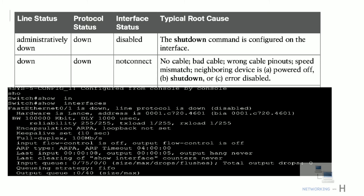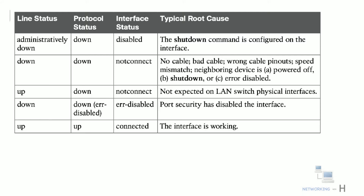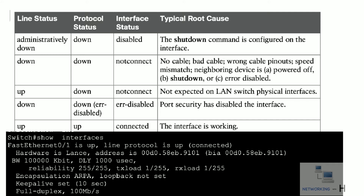Other causes for 'down/down' or 'not connect' include the neighboring device being powered off, shutdown, or error-disabled. If the interface status shows 'error-disabled', the likely cause is that port security has disabled the interface. Finally, if the line status is 'up' and protocol status is 'up', or the interface status is 'connected', then the interface is working normally.